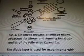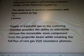So this is a schematic drawing of cross beams apparatus for photo and penning ionization studies of the fluorine C60 and C70. The diode laser is used for experiments with laser-excited AR star 4P3D3 atoms. Supply of a suitable gas to the scattering chamber provides the ability to selectively remove the metastable atom component from the projectile beam while retaining the full flux of rare grass VUV resonance photons. That's Greek to me, I have no idea what that means.